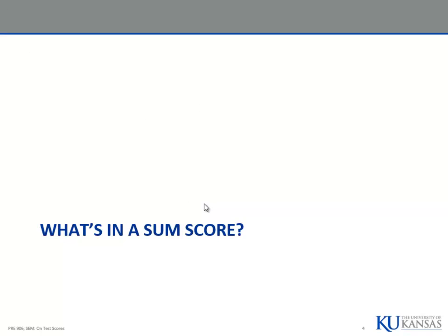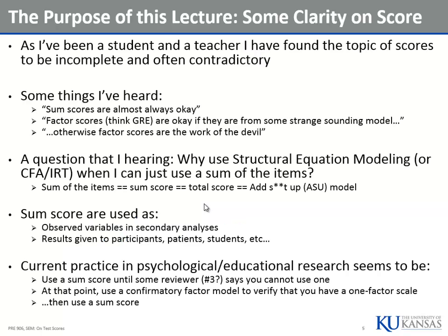So what's in a sum score? As I've been a student and a teacher, I found the topic of test scores to be incomplete and often contradictory. Here are some things I've heard: adding things up — sum scores — are almost always okay, you just add them up. Factor scores like your GRE are okay if they come from some specific model like a computerized adaptive test using IRT. So they're okay.